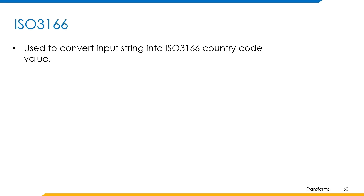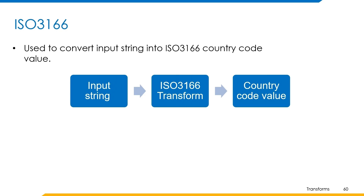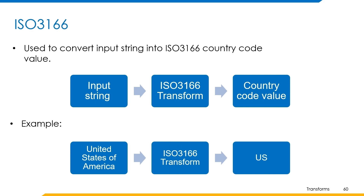ISO 3166 transform is used to convert an input string into an ISO 3166 country code value. The input string must be either a valid country name or country code. If the input does not represent a valid country code, it returns a null value. We pass a country name as input and its country code is returned as output. For example, if United States of America is given as input, then its country code US is returned as output.